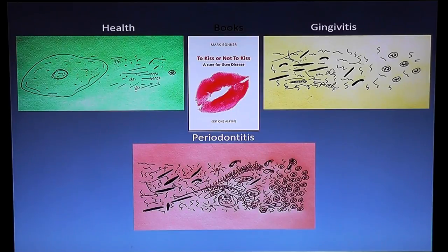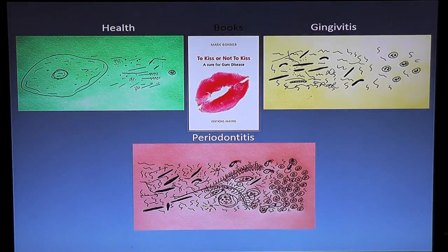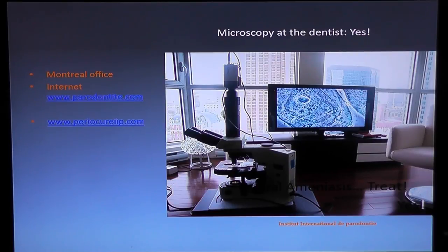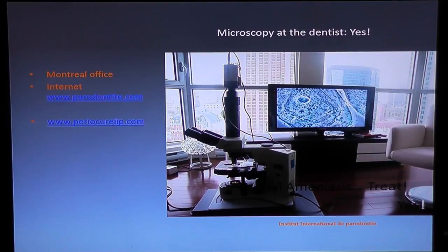If you want to learn more as patients, dentists, or periodontists, you can read our book To Kiss or Not to Kiss: A Cure for Gum Disease, available on Amazon. Dentists should have a microscope and a screen to show patients what is in their mouth. For more information, you can find us at parodontitis.com in French, or periocure.com in English. There you find all our research. You can also read Dr. Trevor Lyons' book on periocure.com. Our protocol is about 100 pages, available there, copyrighted from 2014, with all the treatment modality and data you need to do this treatment.